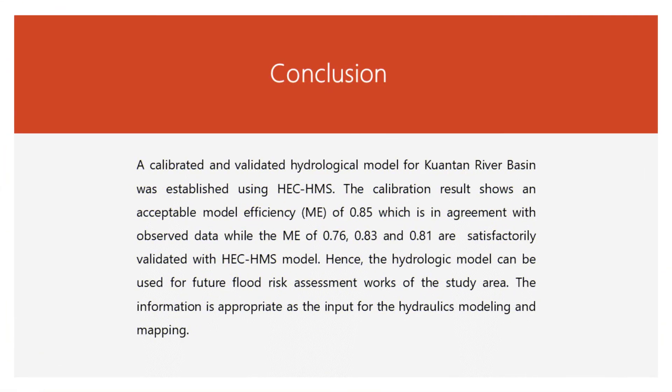In conclusion, a calibrated and validated hydrological model for Kuantan River Basin was established using HEC-HMS. The calibration result shows an acceptable model ME of 0.85, which is in agreement with the observed data, while ME values of 0.776, 0.83, and 0.81 are satisfactorily validated with the HMS model. Hence, the hydrological model can be used for future flood risk assessment work in the study area, and the information is appropriate as input for hydraulic modelling and mapping.